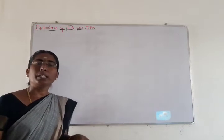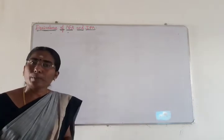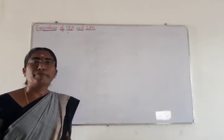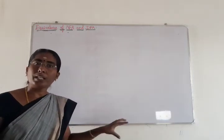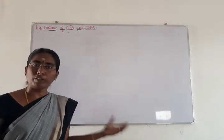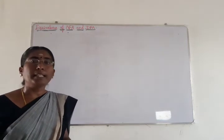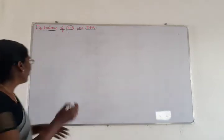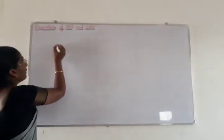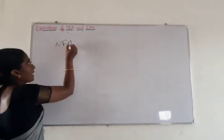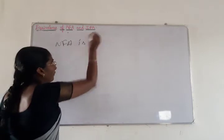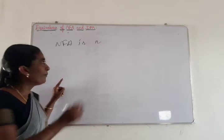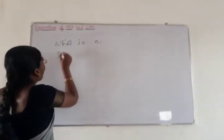Now, how are we converting NFAs into DFAs? If you have an NFA, there must be an equivalent DFA. If you have an NFA for a particular language, then there will be an equivalent DFA for that same language. If the number of states in an NFA is equal to N, then the number of states in the DFA is equal to 2 power N.